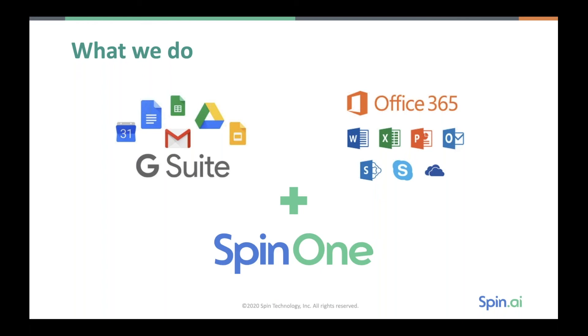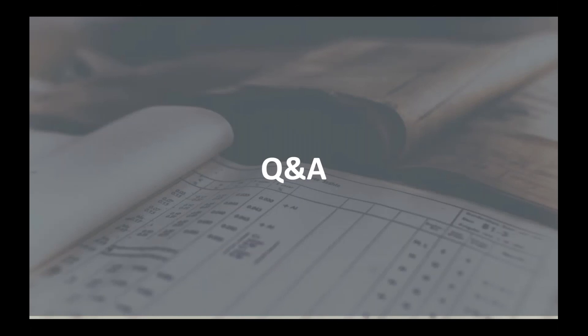We do this for G Suite and for Office 365. The product is called SpinOne. In a minute we'll show you how to get a free trial. Let's take some questions. The first question: other than ransomware, what does the system do? It does a lot — file backup, file restore, user management, checking for rogue browser extensions, and more. I'd recommend contacting us to get a demo to see it all. This live event is focused on AI, so I'm mostly covering the ransomware use case, but there are a fair number of sophisticated features in SpinOne.